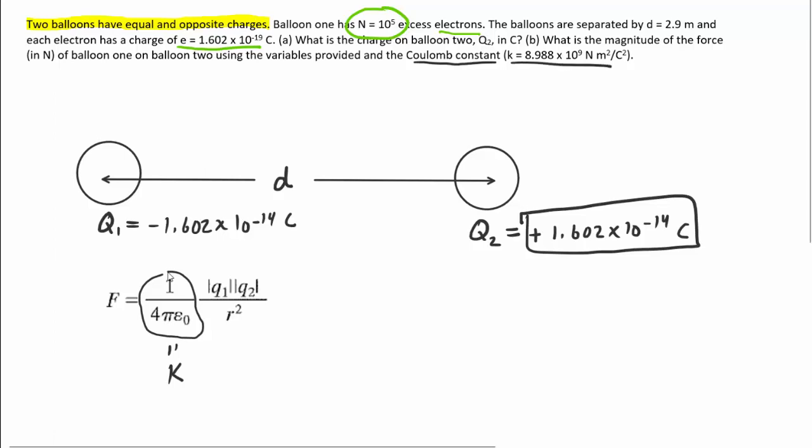And the value of that is given to us. So it's convenient to actually rewrite this equation as simply K times the absolute value of Q1 Q2 and then divided by the distance between those two charges squared.